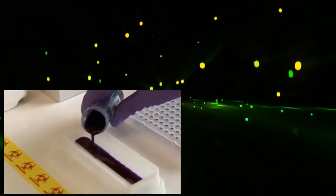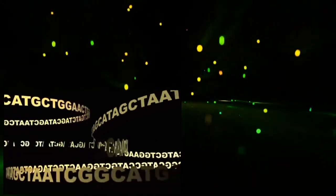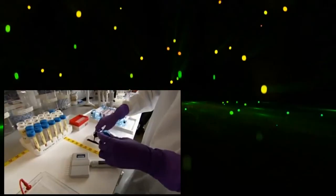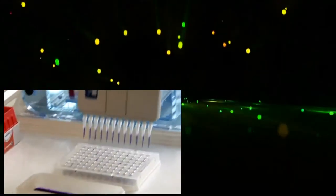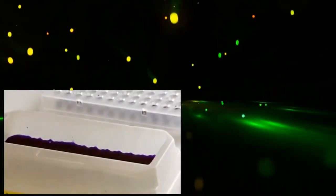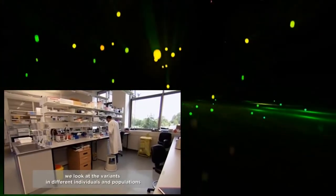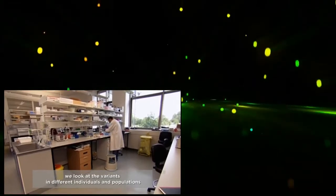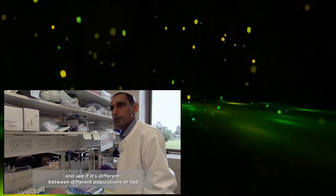They were looking for microsatellites. DNA sequences where a short length of genetic code is repeated over and over again. These sections are not the building blocks of humans. But their exact length varies from person to person and is a measure of how different we are from each other.